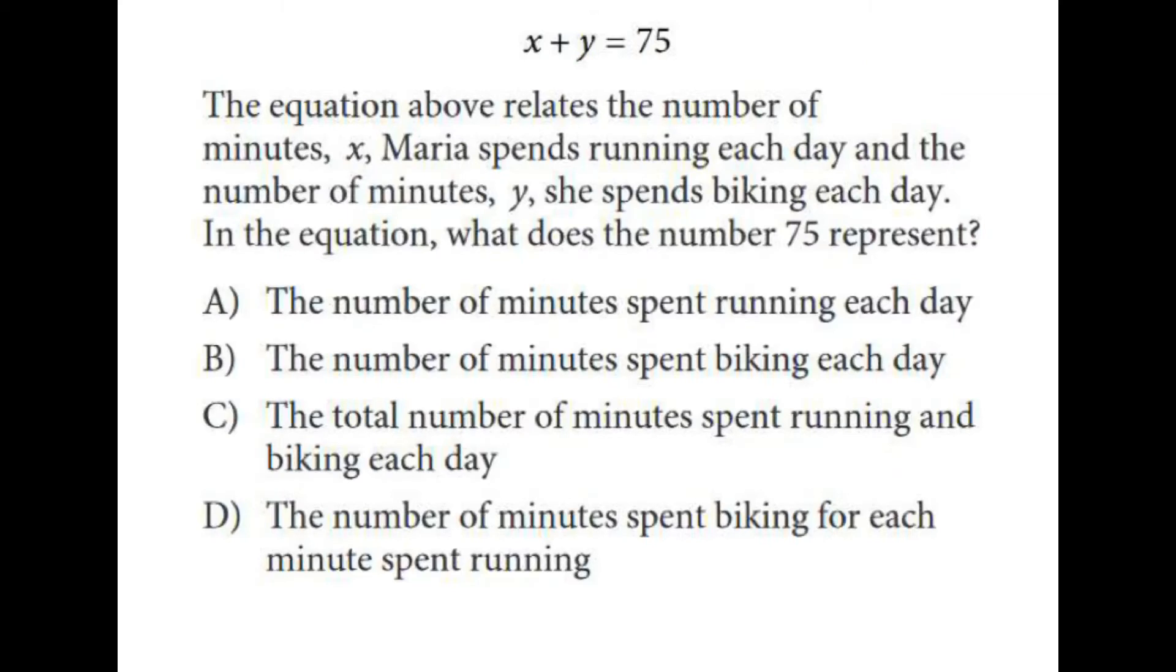The next one, x plus y equals 75. The equation above relates to the number of minutes, x, that Maria spends running each day, and the number of minutes, y, she spends biking each day. So we have x for running and y for biking.